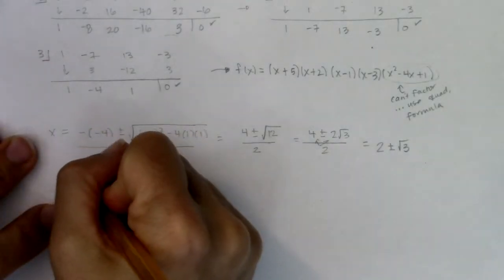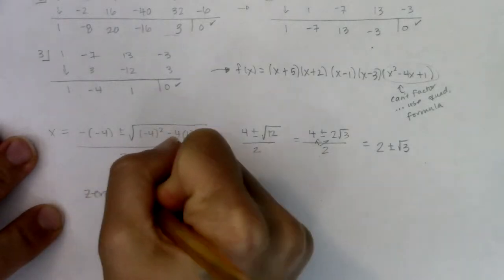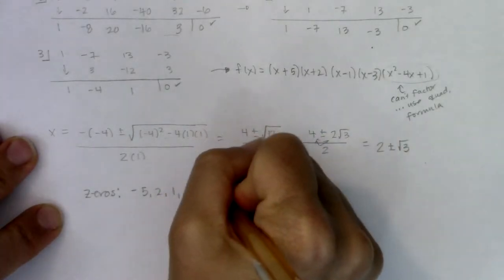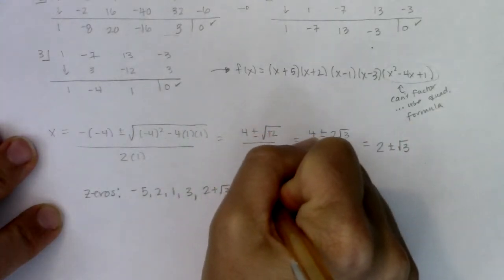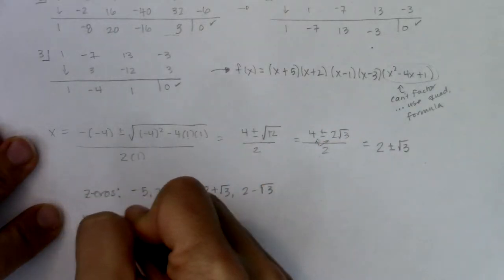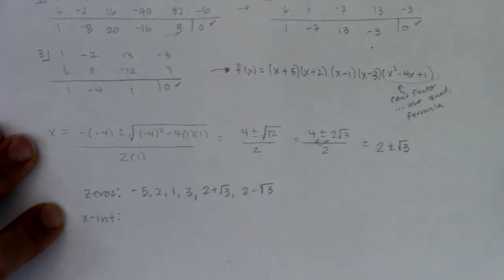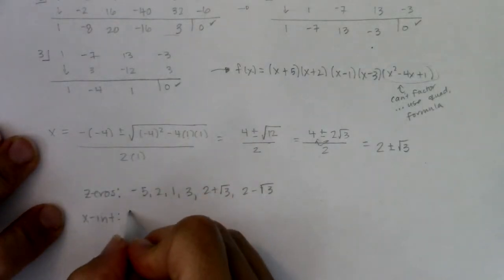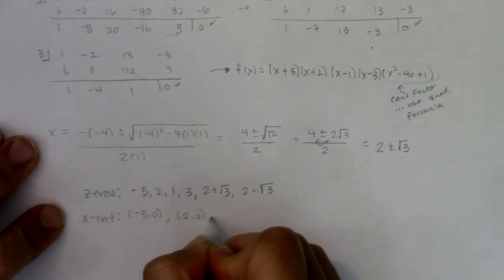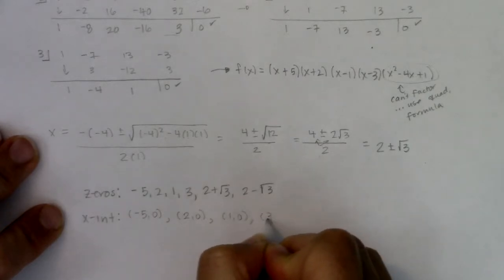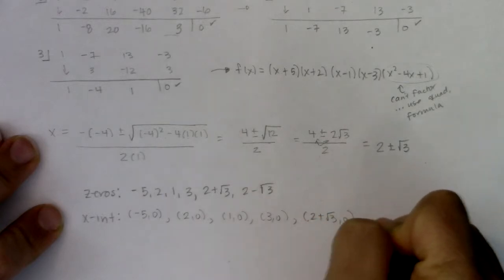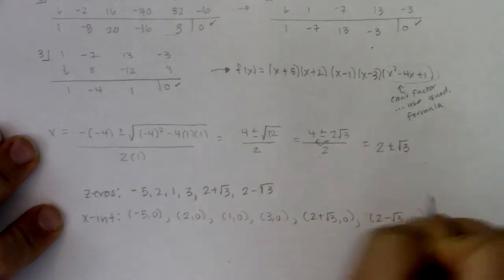At this point, I have my six zeros. I have -5, -2, 1, 3. And then we had 2+√3 and 2-√3. And if I wanted to write these up as x-intercepts, and especially as we're about to head into the next section where we start graphing rational functions, I really want us writing things up as x-intercepts. So I have (-5,0), (-2,0), (1,0), (3,0), (2+√3,0), and last but not least, (2-√3,0).